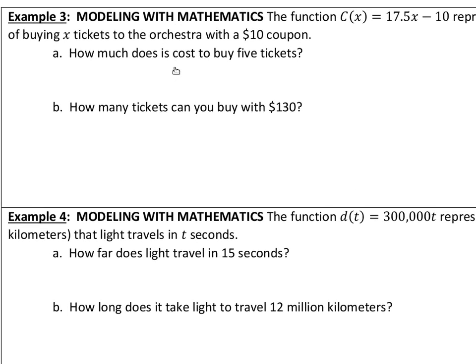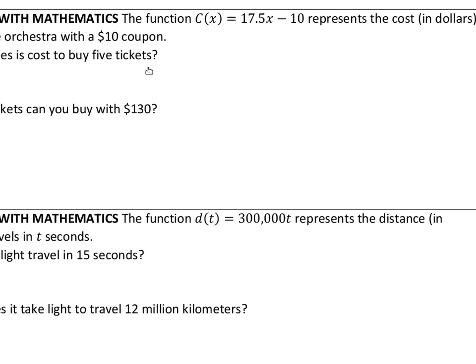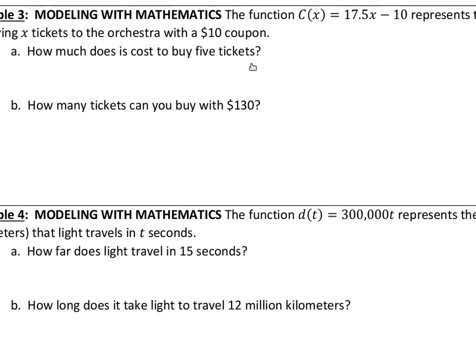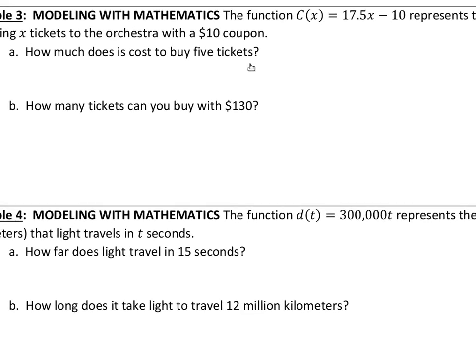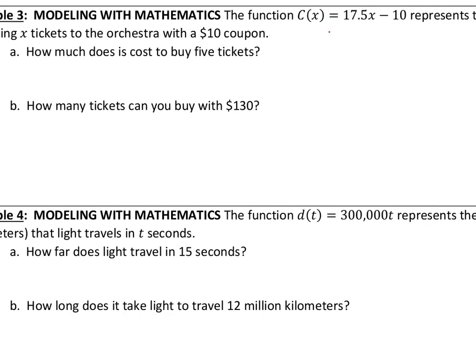Next, example three, the function c of x equals 17.5x minus 10 represents the cost in dollars of buying x tickets to the orchestra with a $10 coupon. How much does it cost to buy five tickets? So let's see. They tell us that x is the number of tickets, so x is our input, it's the number of tickets that we buy, and then c, the whole thing, c of x, c is the cost for an output. So when they ask us how much does it cost, we're looking for an output. We want the cost, if we buy five tickets, let's replace the x, the input, the number of tickets, with five.